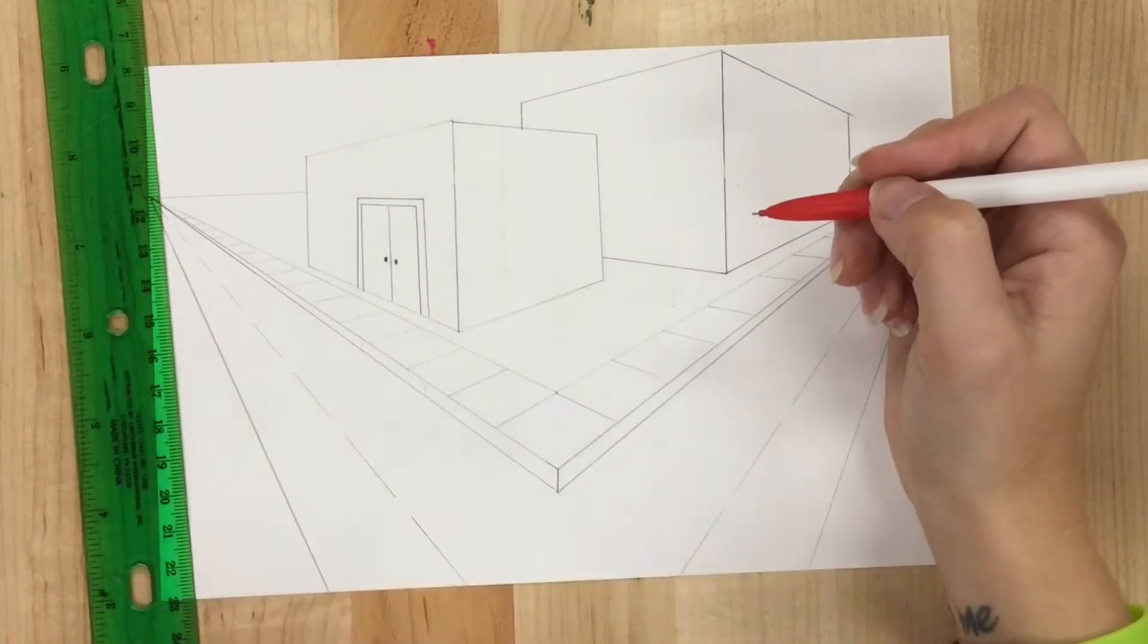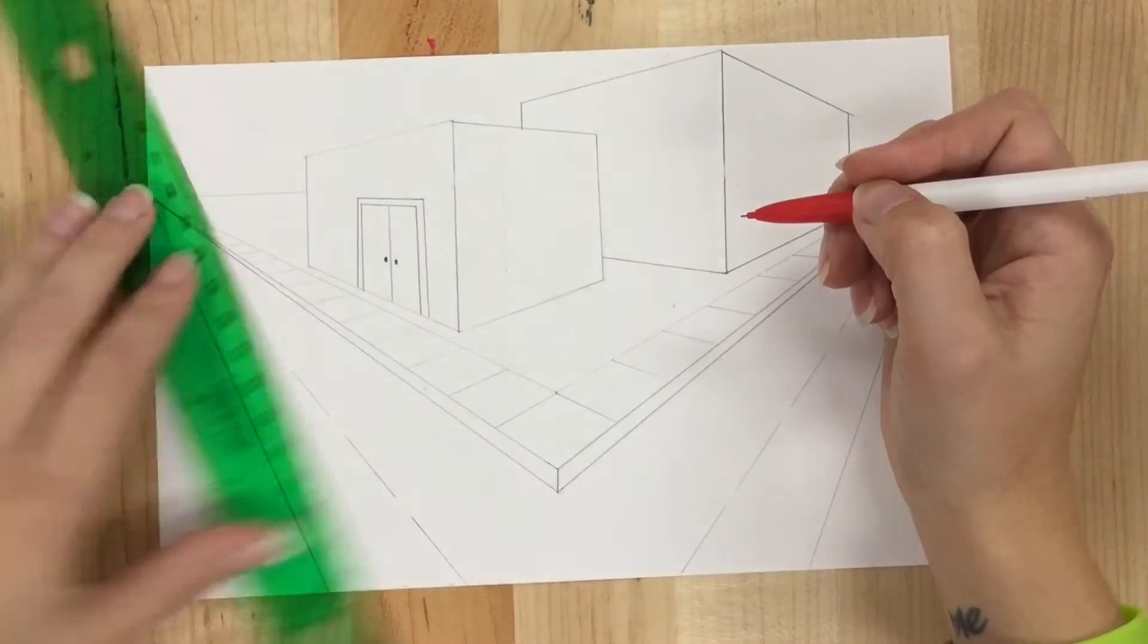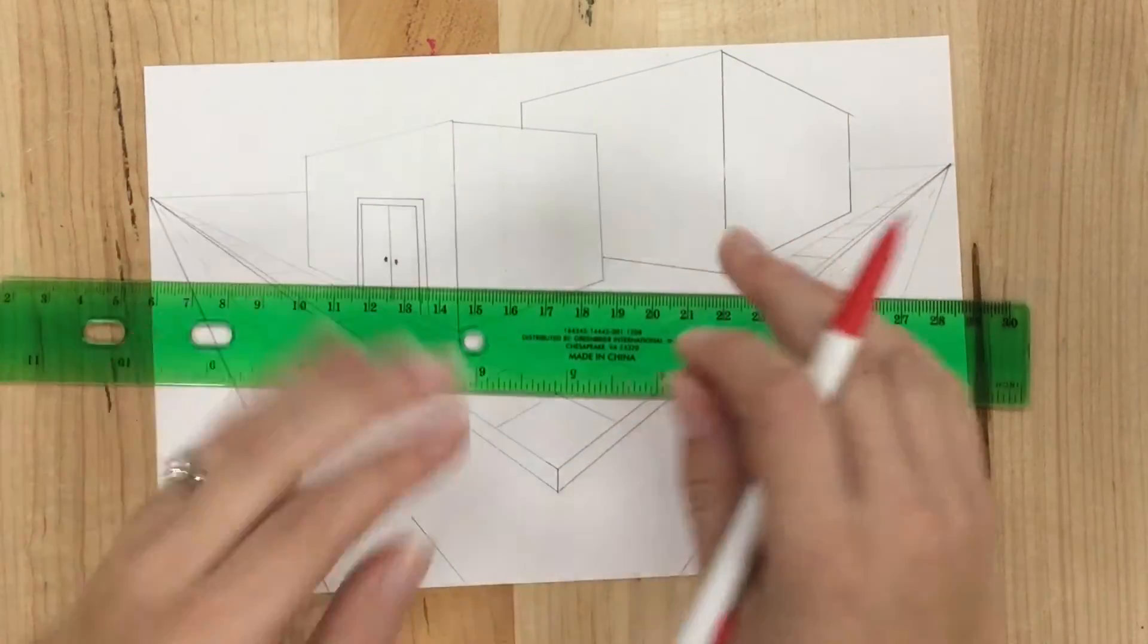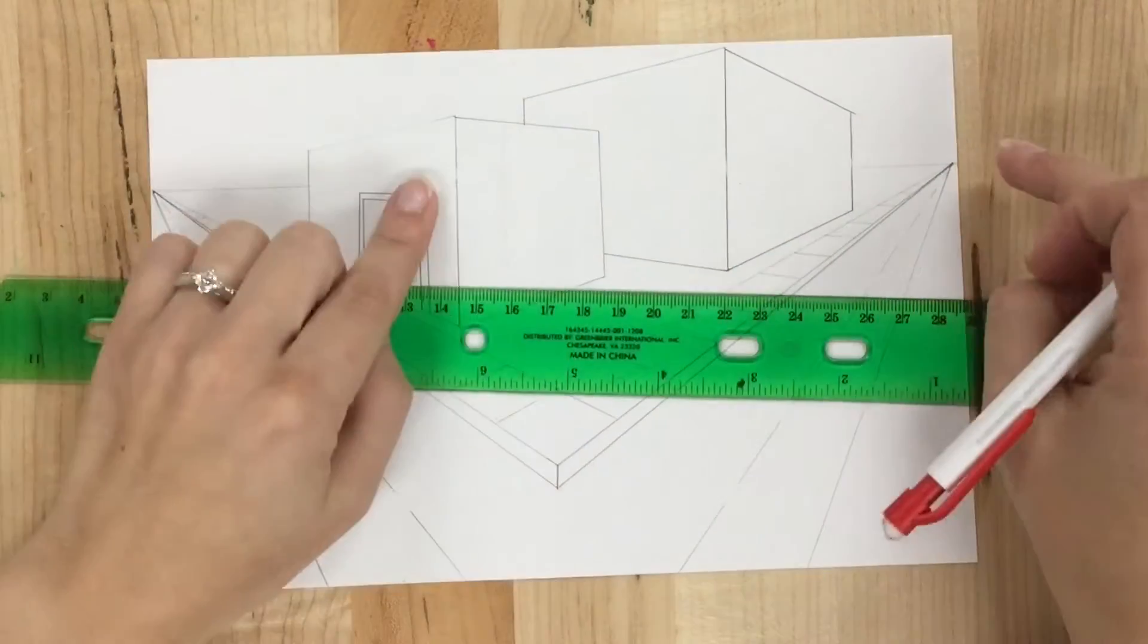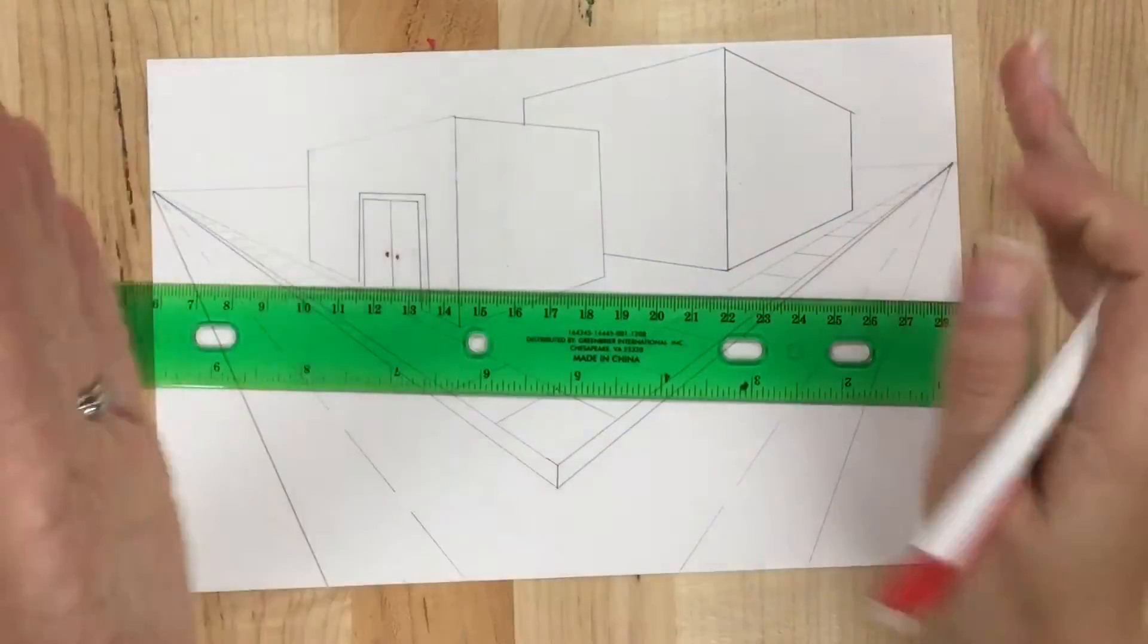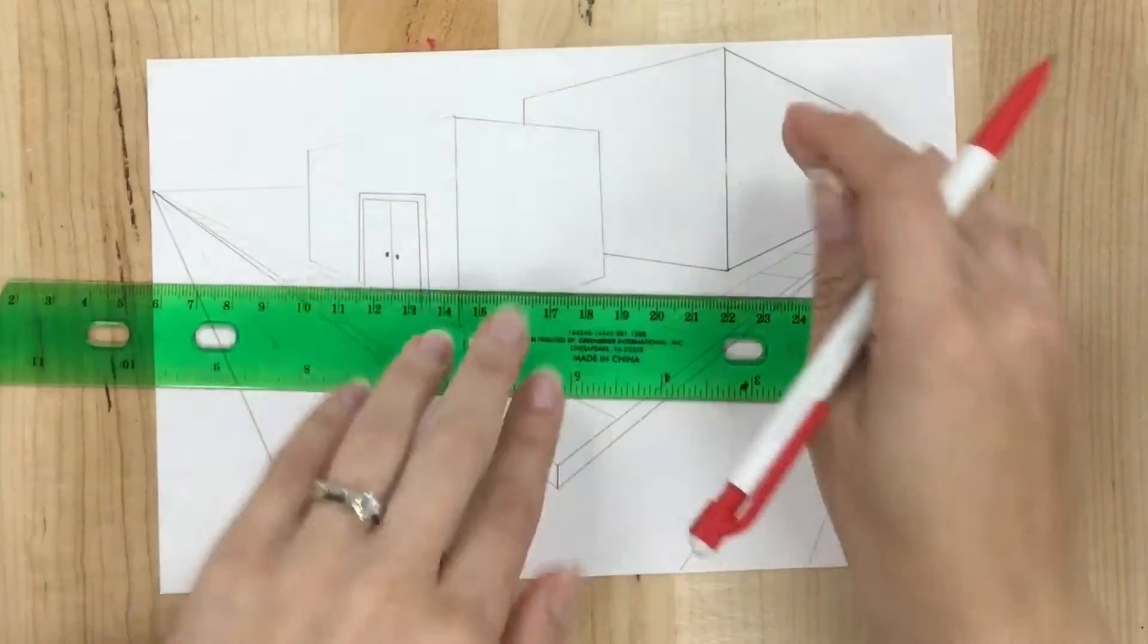I'm going to use my door to get in my building. Let's say this side's got a window. The top and bottom of my window are going to come from my right vanishing point, because it's the right side of my building. But the left and the right side are going to be parallel lines.